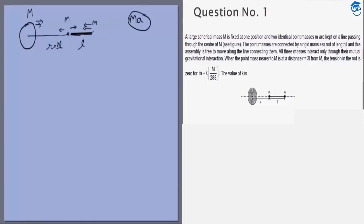So what is the force on this mass due to this mass? That is GMm by R squared, but R is 3L, so 9L squared. This is towards the left minus this force towards the right which will be Gm squared by L squared. This is the net force on this particle towards the left which will be equal to MA for this particle. The same MA will have to be true for this particle because they are connected by a rod.